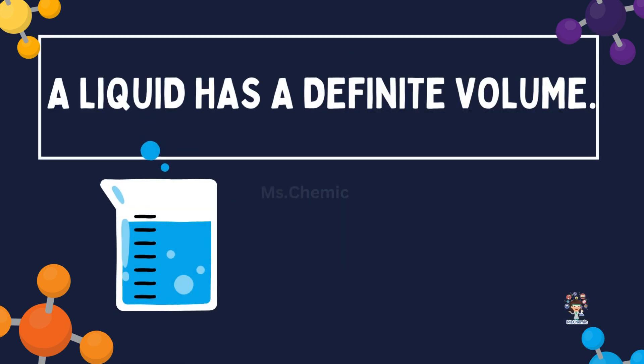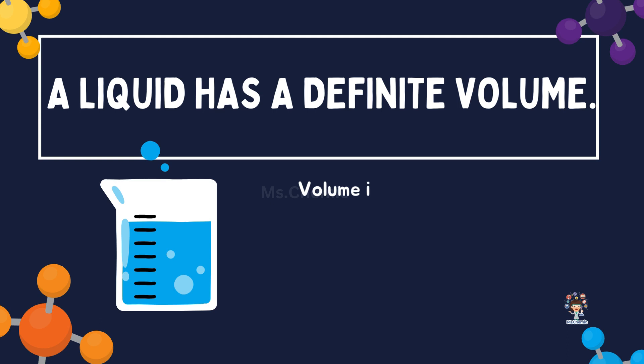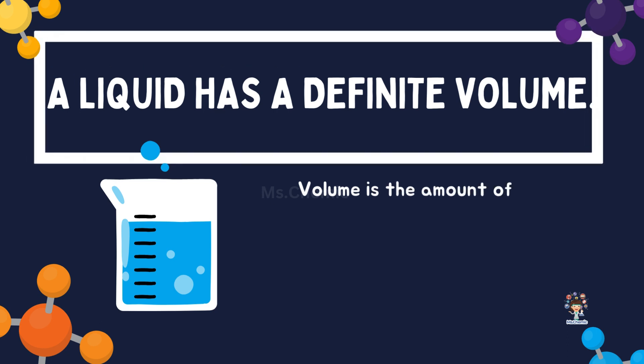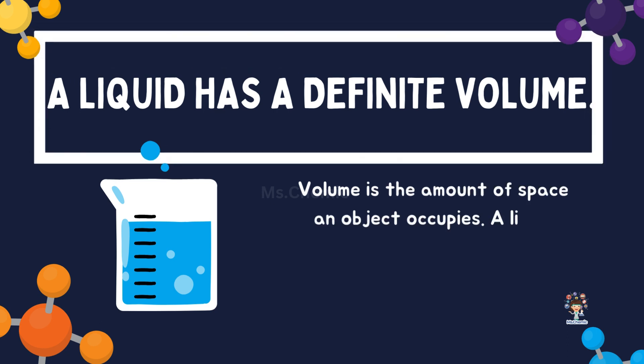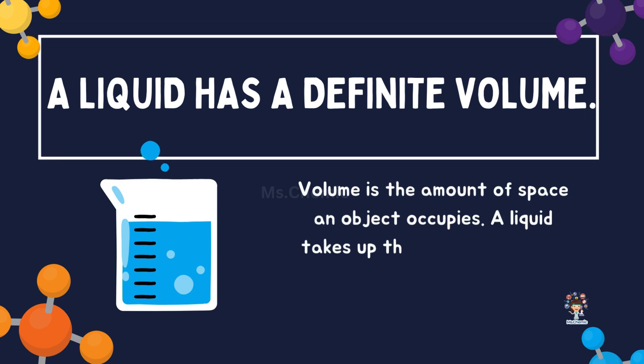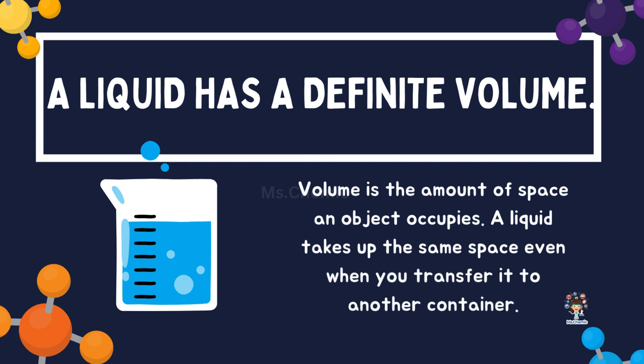A liquid has a definite volume. Volume is the amount of space an object occupies. A liquid takes up the same space even when you transfer it to another container.